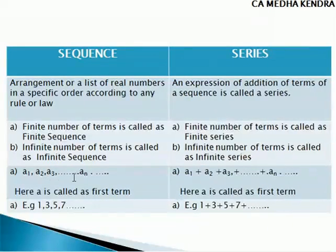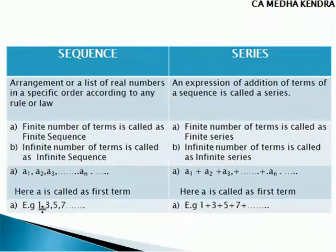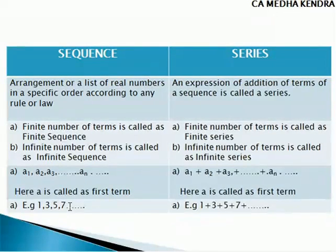The common form for sequence is a1, a2, a3, etc., up to aN. In sequence as well as series, we call the first term A. For example, 1, 3, 5, 7, etc. is an example of a sequence. When we express the same in the form of addition, it becomes a series.